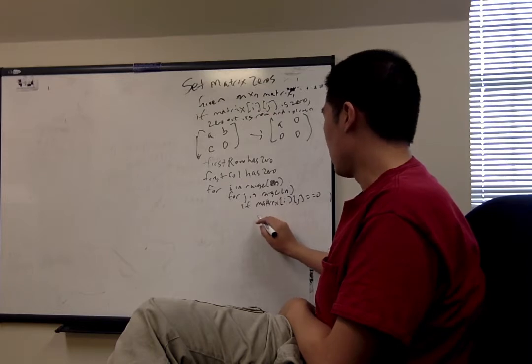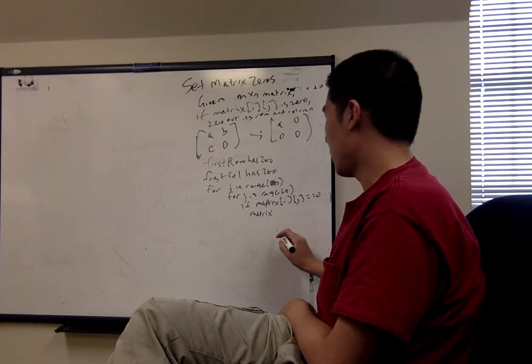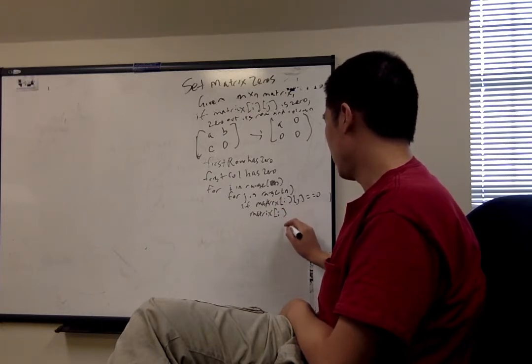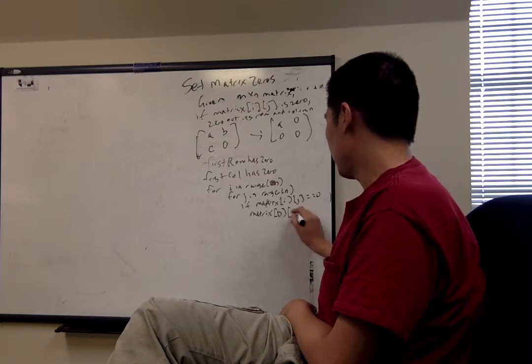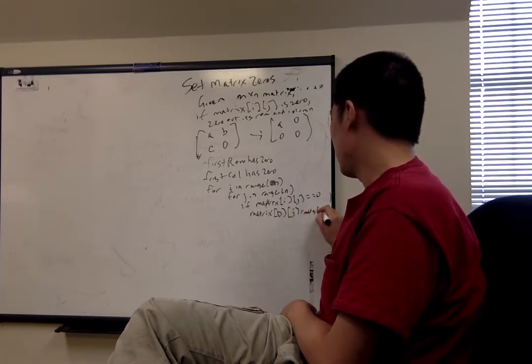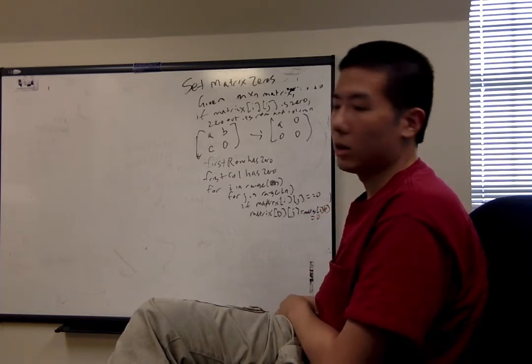then we want to mark the first row and first column with that index. So matrix[i][0] and matrix[0][j] equals zero.